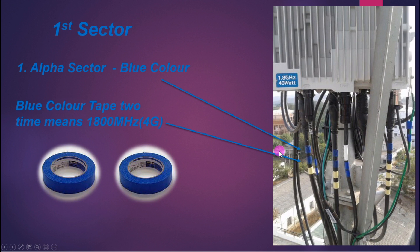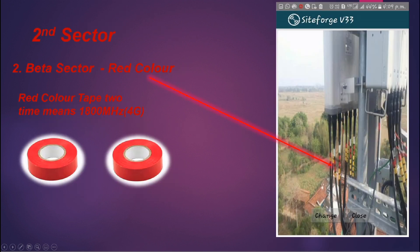For the second sector, called Beta sector, you have to use red color tape and mark it two times for 1800 megahertz. In this example picture you can see they have marked two-time red tape, and also yellow tape to identify port numbering — showing which jumper connects to which port. When you visit the site and see red color with two-time tape, that means 1800 megahertz is running for Jio 4G technology.